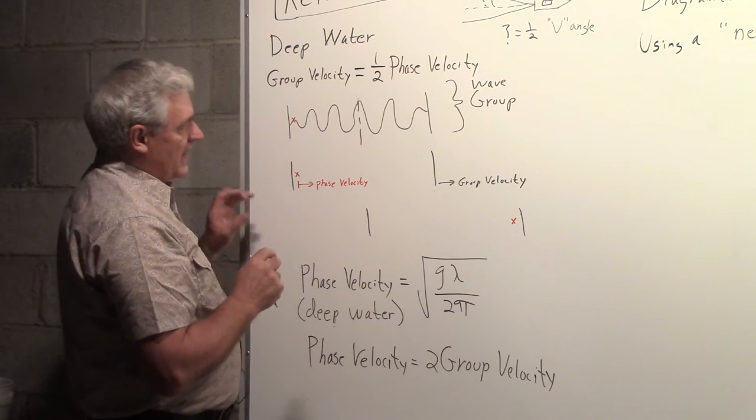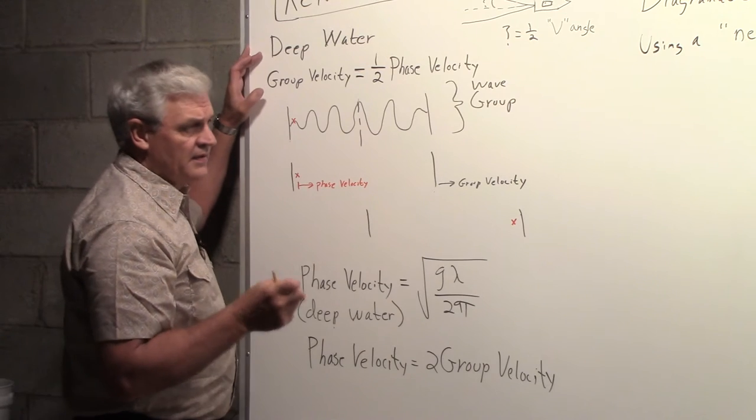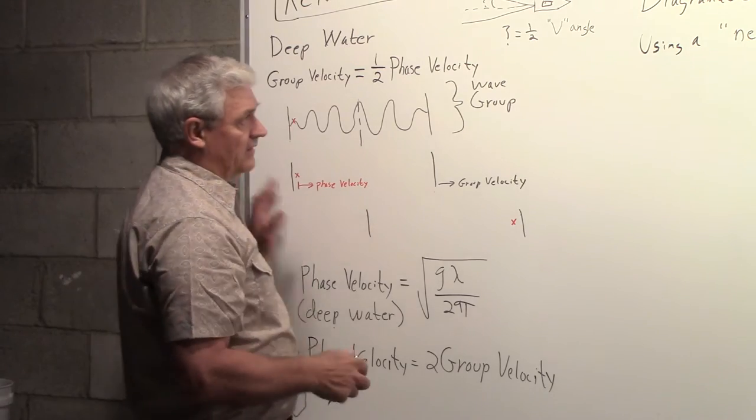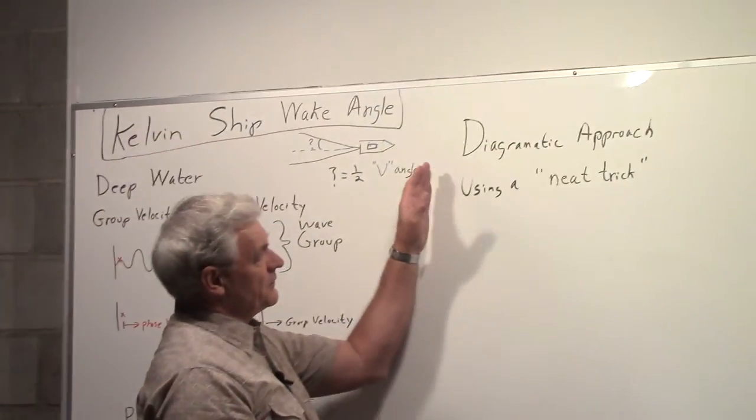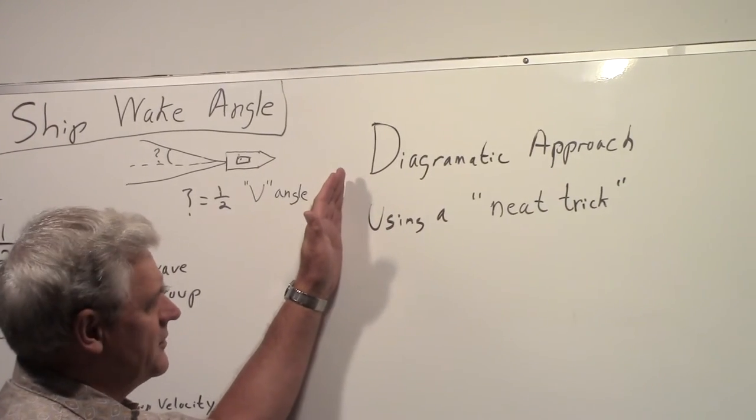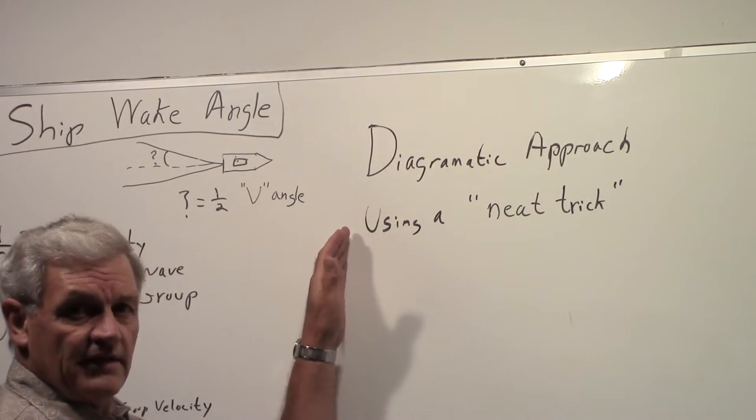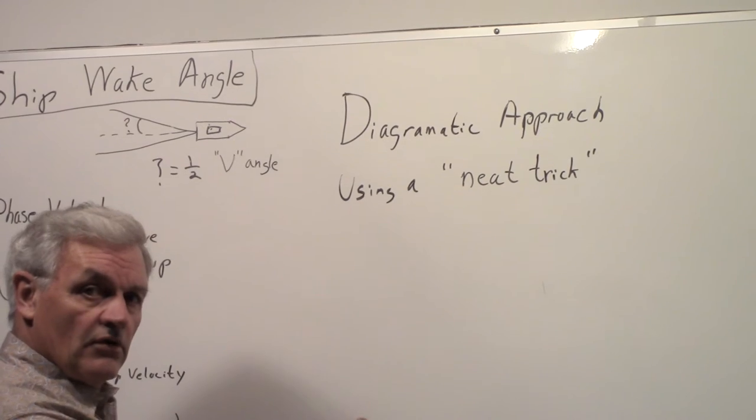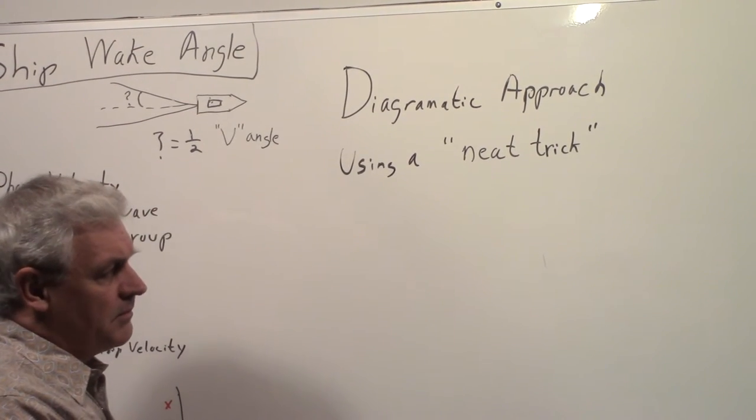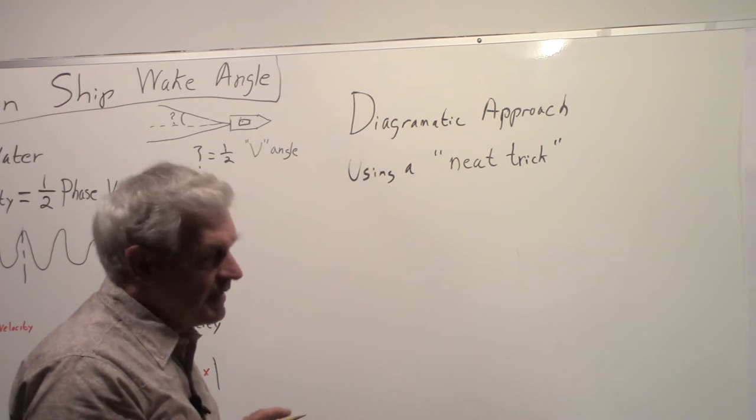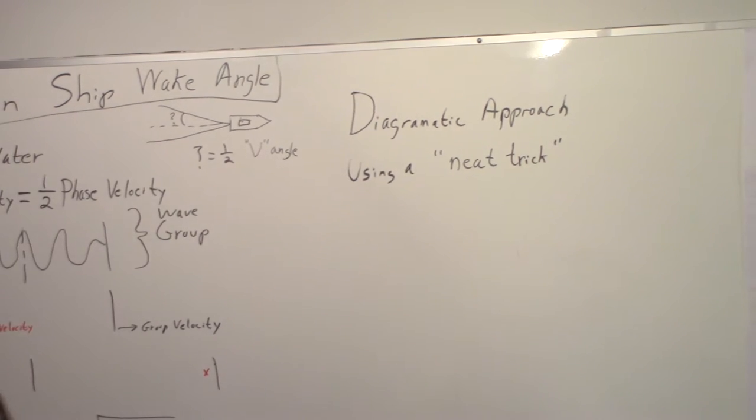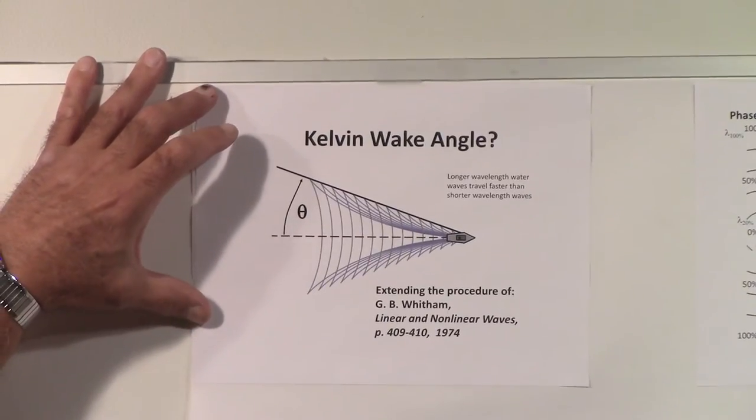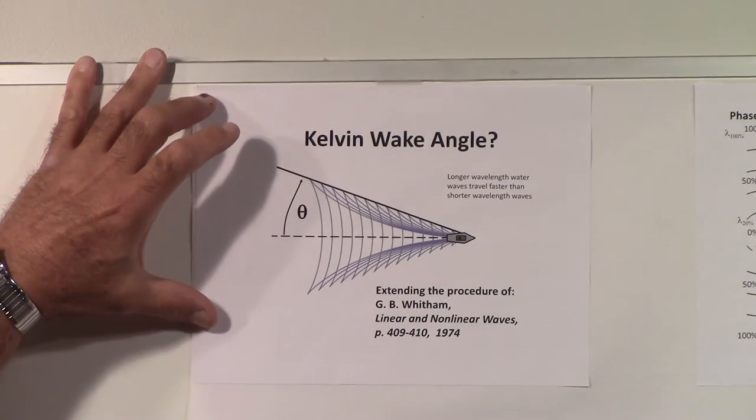This fact of the group velocity being one half the phase velocity is what comes into play in coming up with this angle. If we just take a look at this, I want to point out we're using a diagrammatic approach, and we're going to use what I like to think of as a neat trick. It's too complicated to draw accurate diagrams on the board, so I'm going to rely upon some charts.